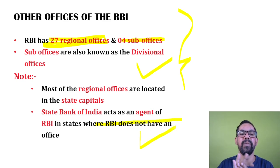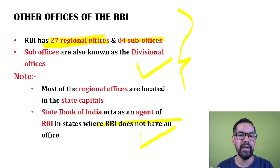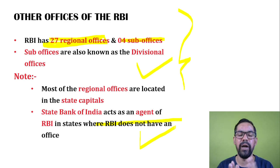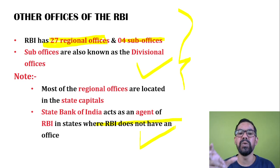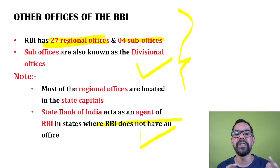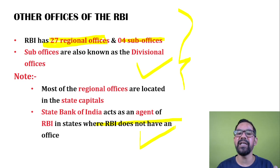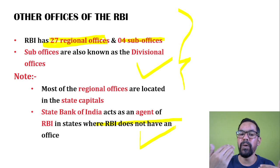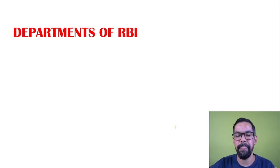In terms of reporting order: orders are passed from RBI's central office in Mumbai to the four local board offices (Delhi, Mumbai, Kolkata, Chennai), which then pass orders to the 27 regional and sub-offices, which then pass to banks. Banks report back to regional offices, regional offices to local board offices, and local board offices to the head office — this is the complete working structure of RBI.